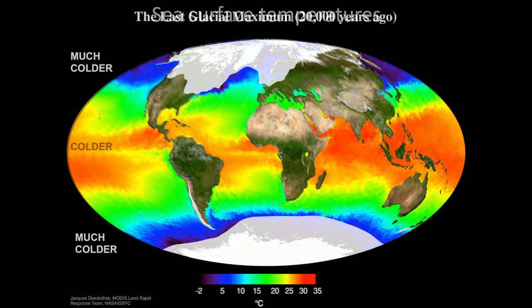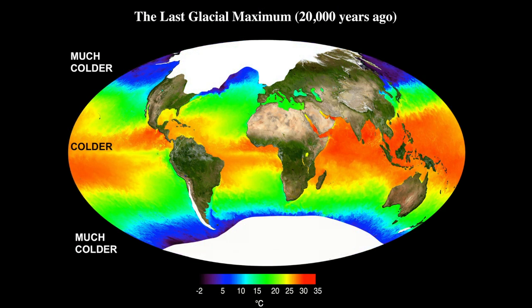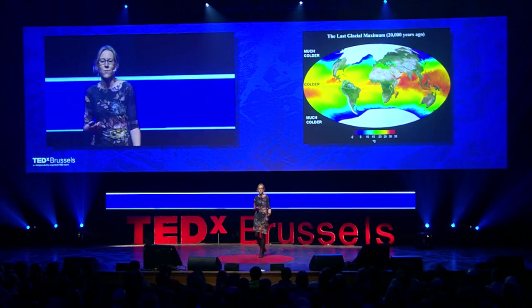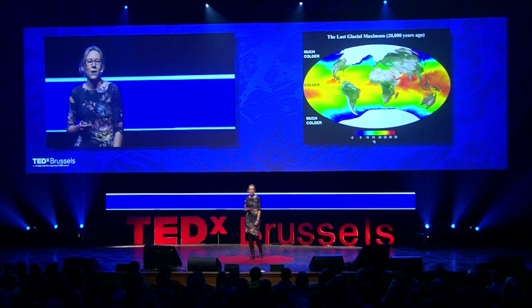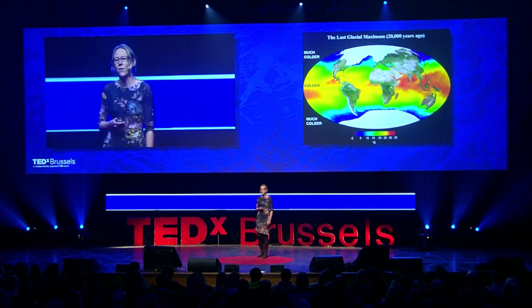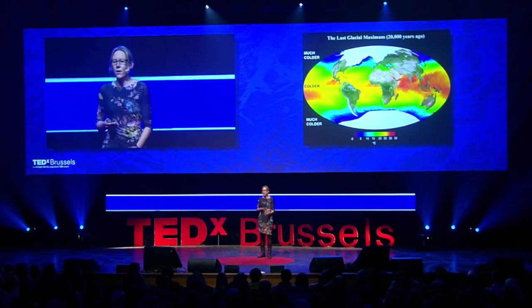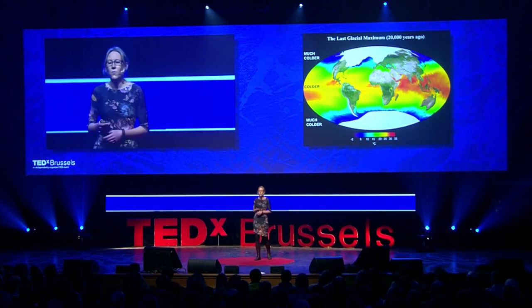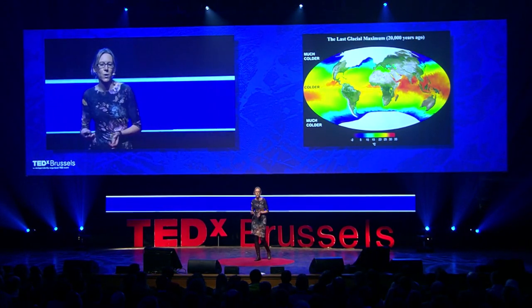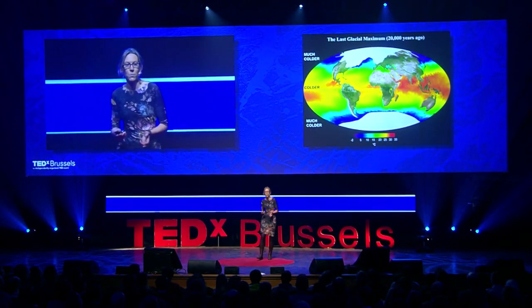If we travel back in time 20,000 years ago, the Earth looked very different. The ice caps were much bigger, covering lots of the continents and extending out over the ocean. Sea level was 120 meters lower. Carbon dioxide levels were much lower than they are today. The Earth was probably about three to five degrees colder overall, and much, much colder in the polar regions.